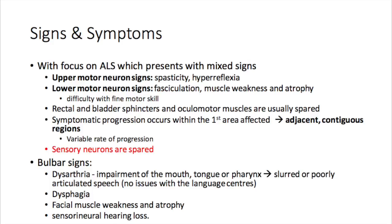Moving on to signs and symptoms. With focus on ALS, which presents a mixed picture, you can have upper motor neuron signs where patients present with spasticity and hyperreflexia. They can also have lower motor neuron signs, including fasciculations, muscle weakness and atrophy, and difficulty with fine motor skills. Notably, rectal, bladder sphincter, and ocular muscles are spared.